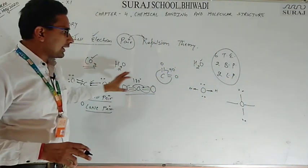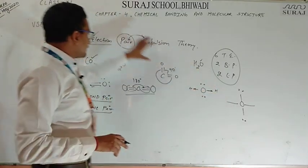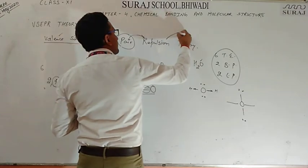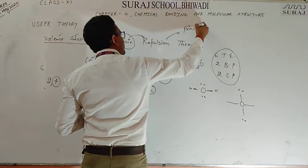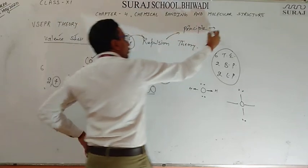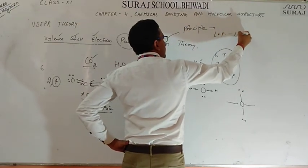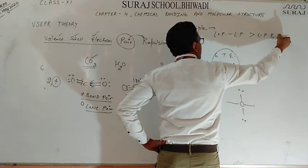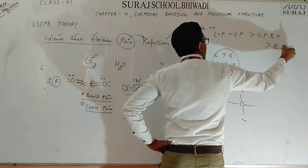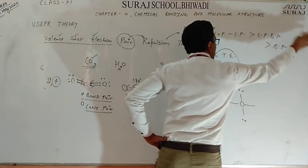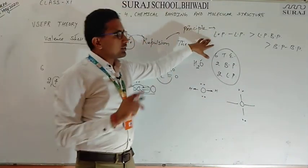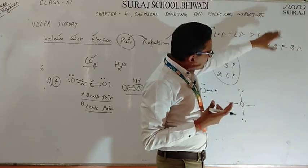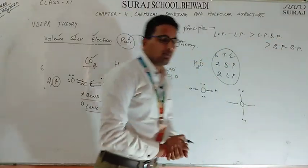So this is the basic principle: 2 lone pairs and 2 bond pairs. The lone pairs and bond pairs repel each other. Lone pair to lone pair repulsion is the most negative — it is the strongest repulsion.